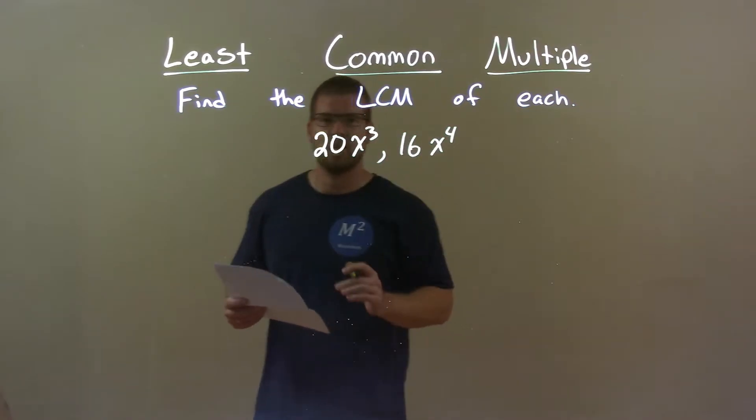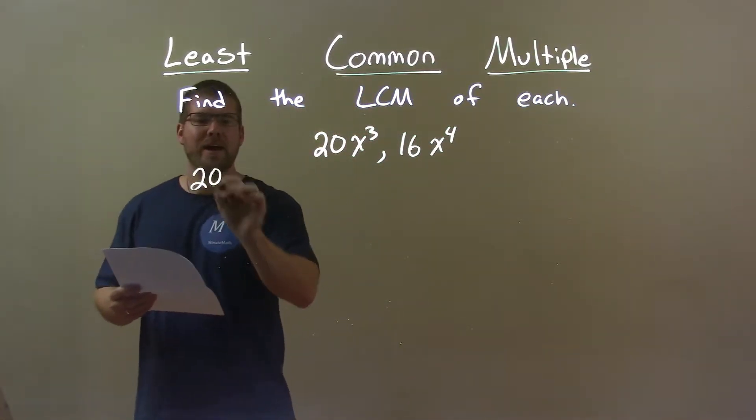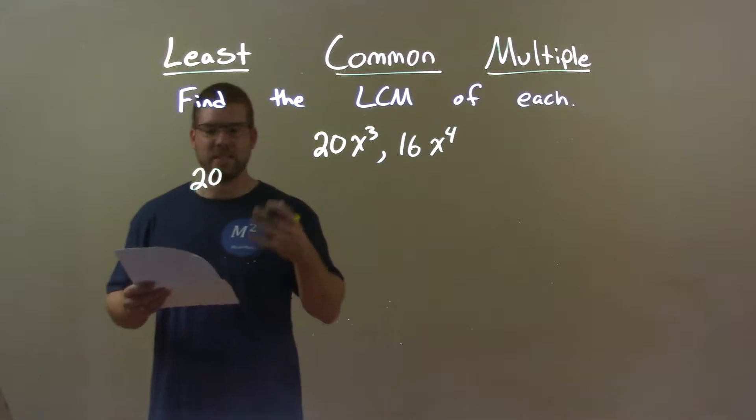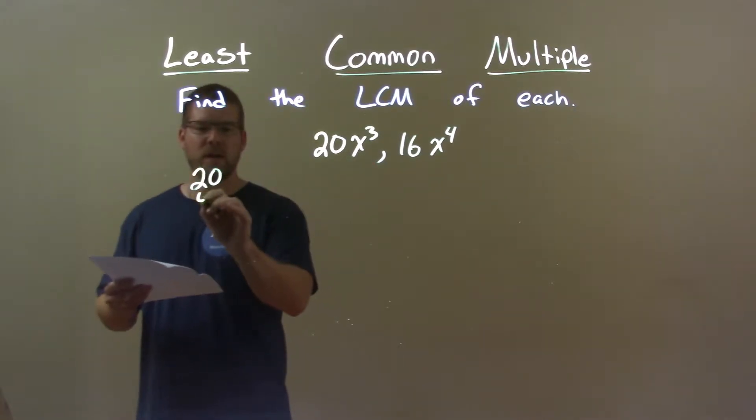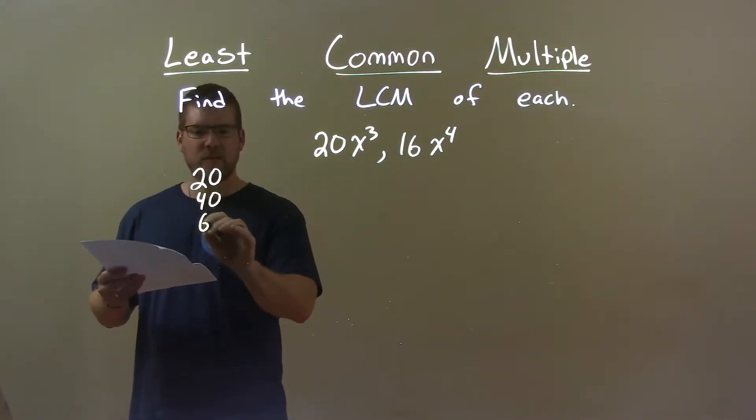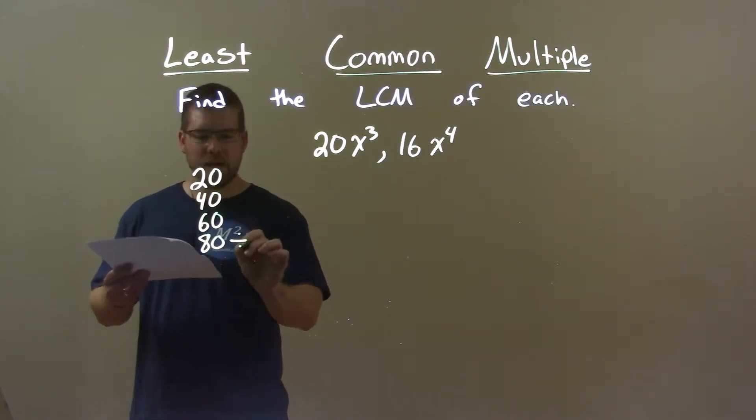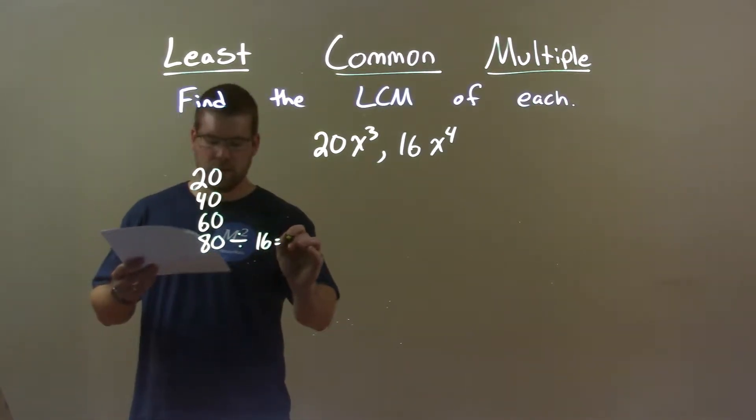The largest number is 20 and I go through its multiples and see which one is divisible by 16, the first one too. 20 is not and neither is 40. 60 also is not divisible by 16 but 80 is. 80 divided by 16 gives me 5.